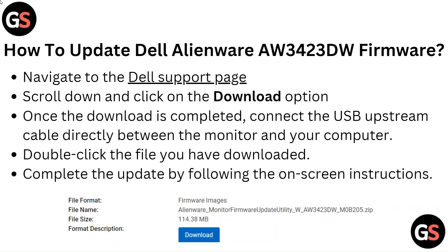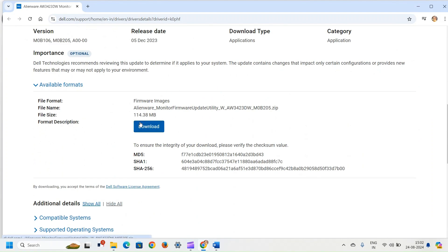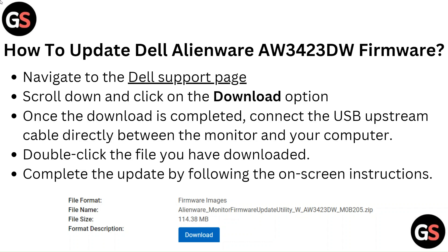To update the Dell Alienware AW3423DW firmware, navigate to the Dell support page, scroll down and click on the download option. Once the download is completed, connect the USB upstream cable directly between the monitor and your computer. Double-click the downloaded file and complete the update by following the on-screen instructions.